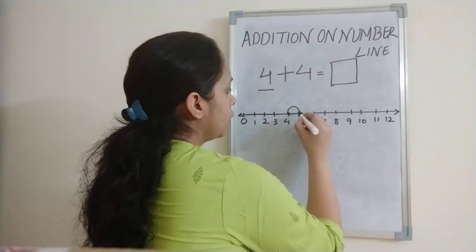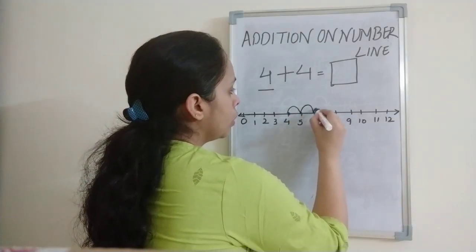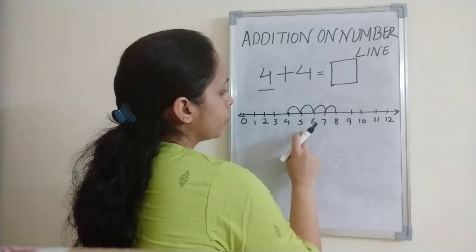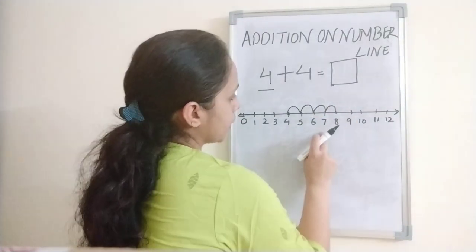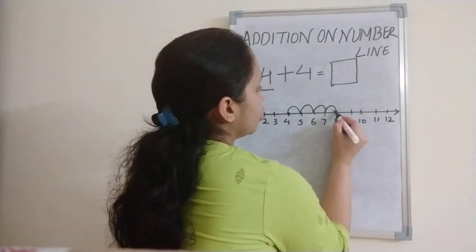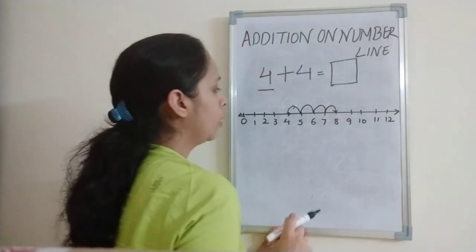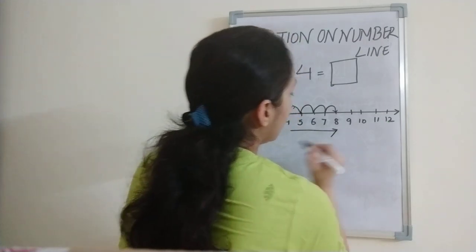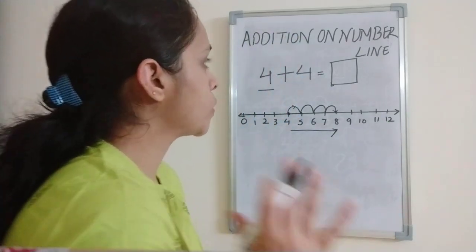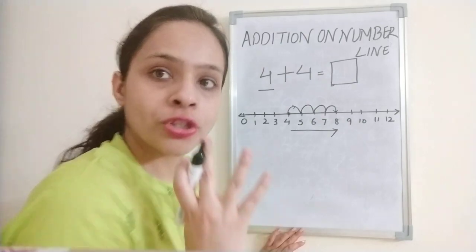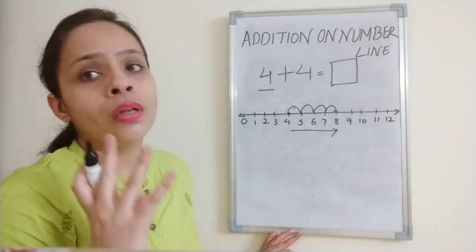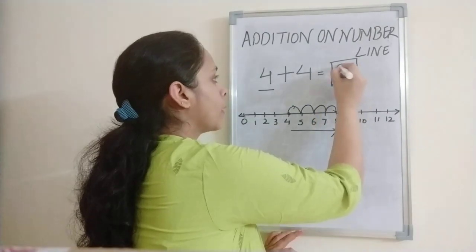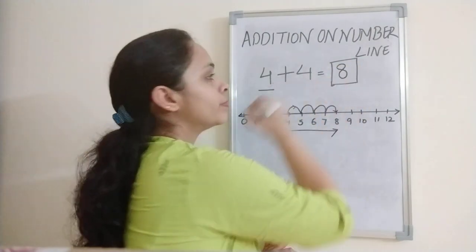One, two, three, four. From four to five, five to six, six to seven, seven to eight. Jumping like that, where did the frog reach from four? He reached eight. Obviously four jumps taken and he reached number eight. So the sum of four plus four is eight.